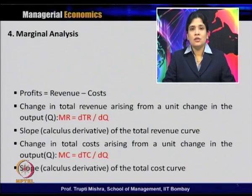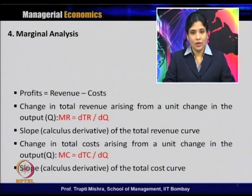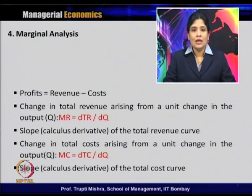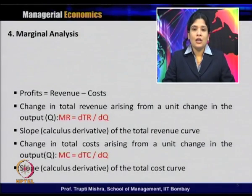Profit is the difference between revenue and cost. Mathematically, marginal revenue is the first-order derivative of the total revenue function with respect to Q, which is output, and geometrically it is the slope of the total revenue curve. Similarly, marginal cost is the change in total cost with respect to change in Q, and geometrically the slope of the total cost curve gives us the marginal cost curve.